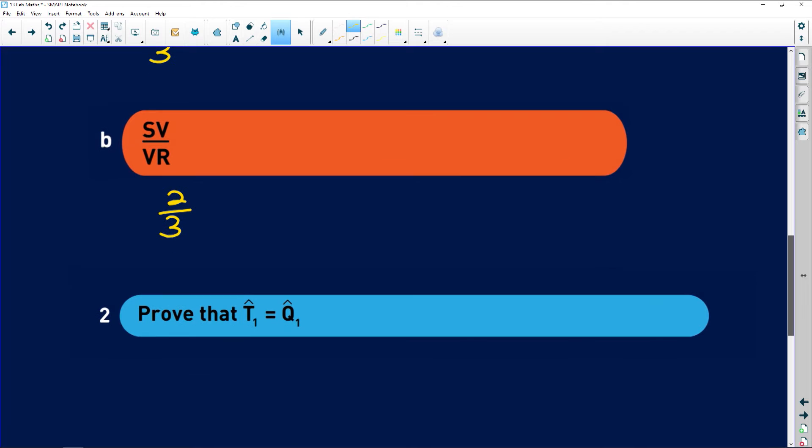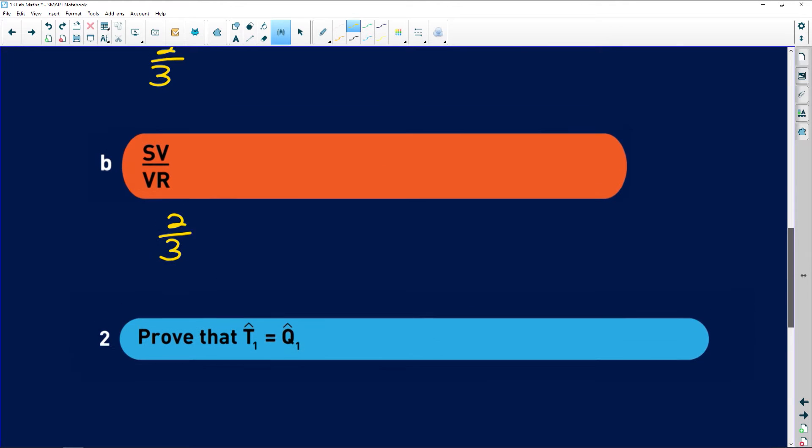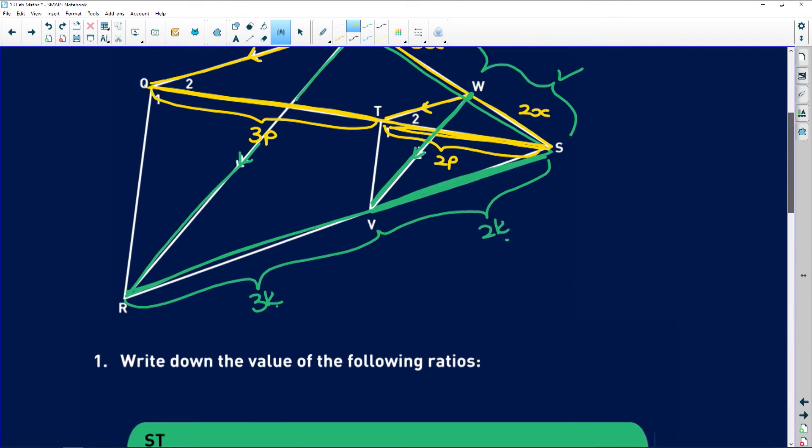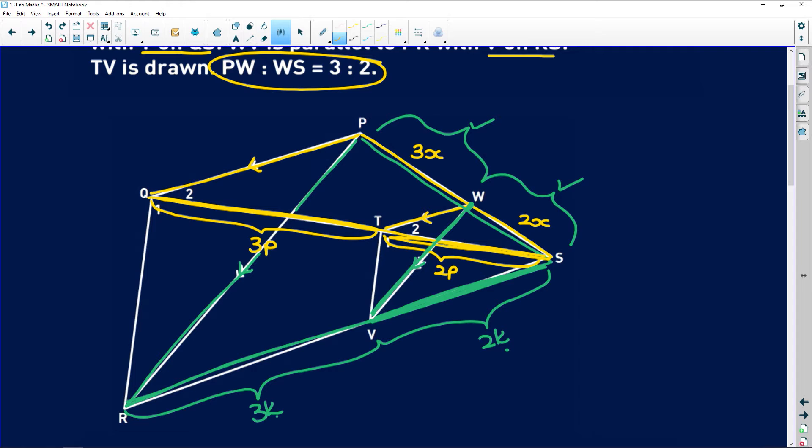Then it says question 2. Prove that T1 is equal to Q1. So let's take a look. Where is T1? T1 is over here and Q1 is over there. So now if we look. I'm going to redraw that triangle. QSR. That's a triangle coming from Q going to S and then ending up at R.